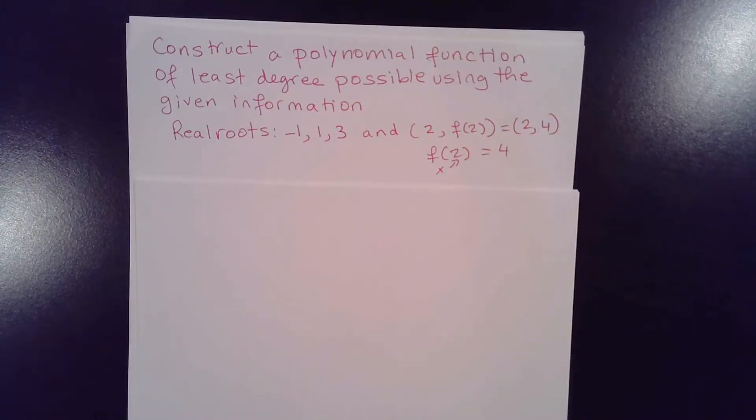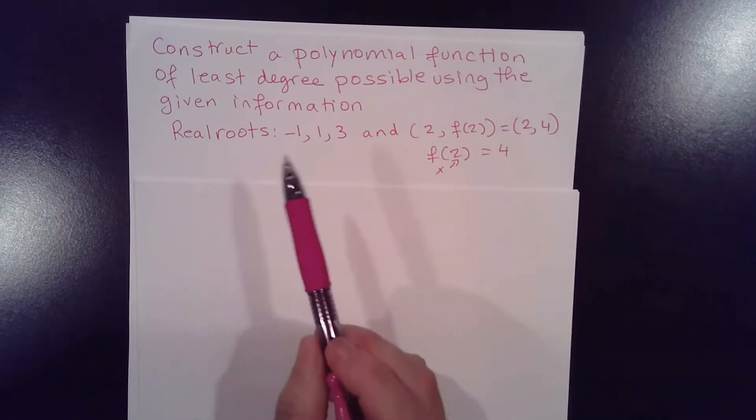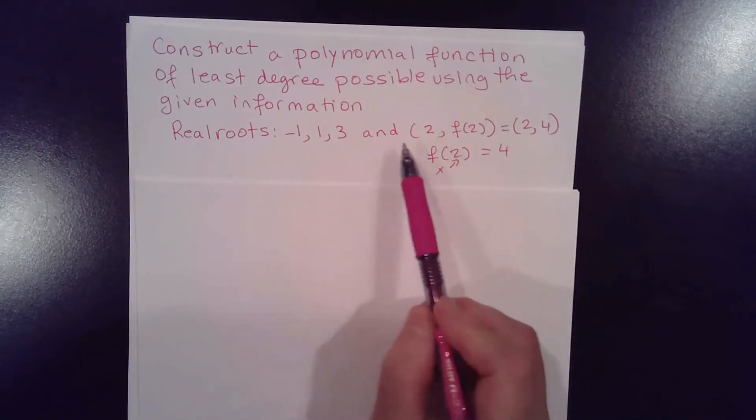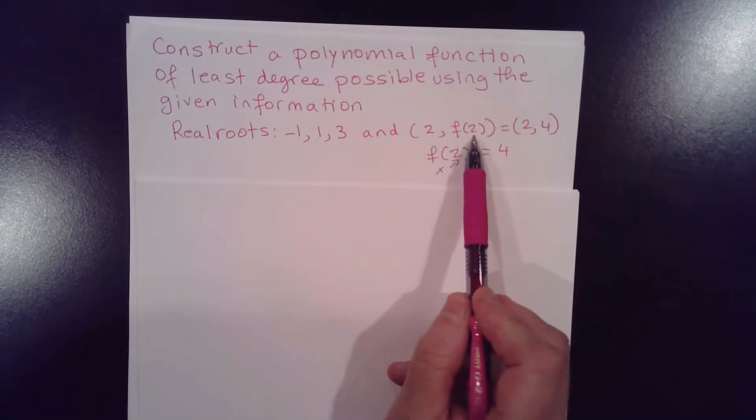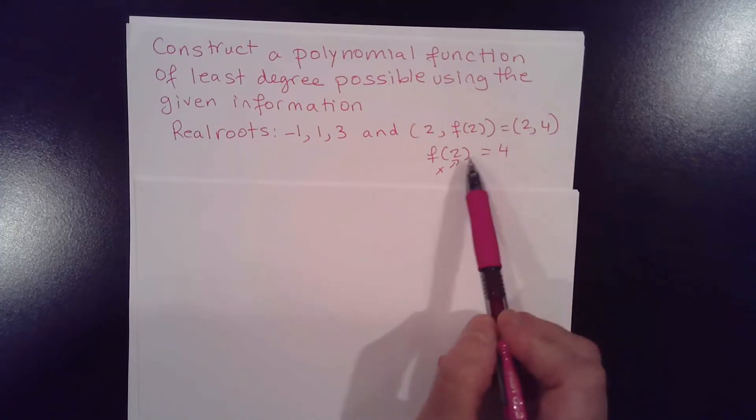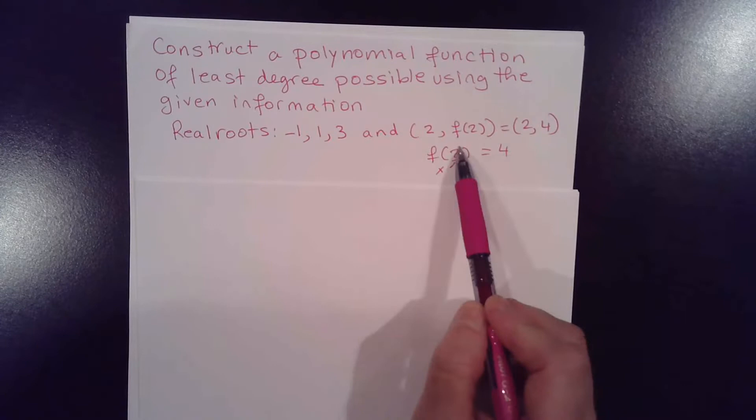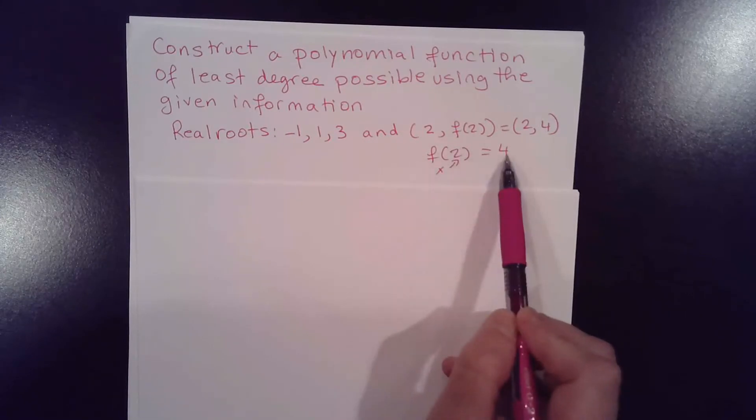Hello everybody, today we're going to construct a polynomial function of least degree possible using the given information. We have real roots to be negative 1, 1, 3, and 2, f(2) is the same as 2, 4. Another way of saying it, f(2) is equal to 4, so when x is 2, the function is equal to 4.